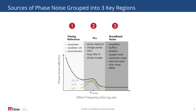Sources of noise in the phase noise plot can be grouped into three distinct regions. The close-in offset frequency region is dominated by the resonator and oscillation circuitry and the influence that the environment has on those elements. The far-out offset frequency range is dominated by all of the things that go into making up the noise floor of the device, the most dominant of which is usually the output buffer.